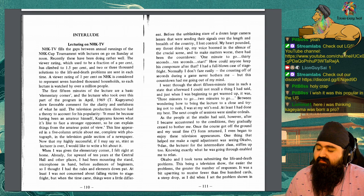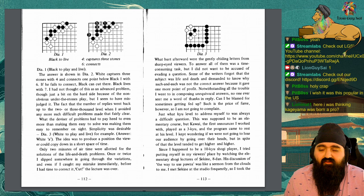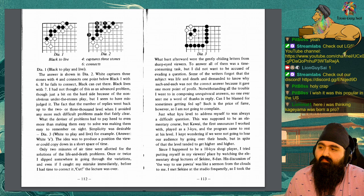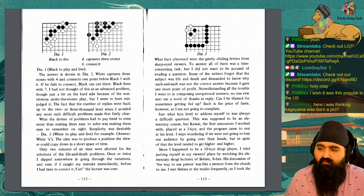One thing that helped me make a rapid adjustment was seeing Okubo 9-dan, the lecturer for the intermediate class, stiffen up too. Knowing exactly what he was going through enabled me to relax. Okubo 9-dan and I took turns submitting the life and death problems. This being a television show, the easier the problems, the greater the number of responses. It was a bit upsetting to receive fewer than 500 cards, a steep drop, as I did when I set up the problem shown in diagram 1, black to play and live. The answer is shown in diagram 2. White captures 3 stones with 4 and connects 1 point below black 1 with 6. If he fails to connect, black can cut there. Black lives with 7. I had not thought of this as an advanced problem, though just a bit on the hard side because of the non-obvious under the stones play. But I seem to have misjudged it. The fact that the number of replies went back up to the 2000 or 3000 level when I avoided any more such difficult problems made that fairly clear.